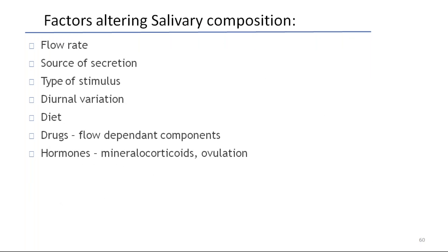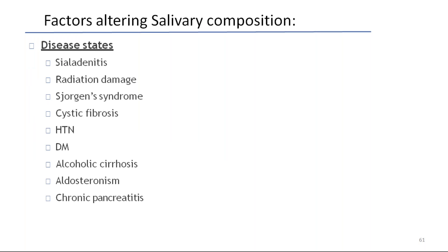Factors altering salivary composition include: the source of secretion, type of stimulus, diurnal variation, diet, drugs, flow-dependent components, and hormones like mineralocorticoids. Disease states like sialoadenitis, radiation damage, Sjögren's syndrome, cystic fibrosis, hypertension, diabetes mellitus, alcoholic cirrhosis, aldosteronism, and chronic pancreatitis also alter salivary composition. Thank you.